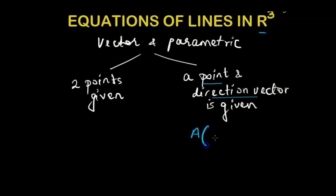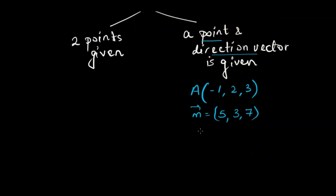So let's say if we're given point A with coordinates negative 1, 2 and 3, and we're given the direction vector as 5, 3, 7. We would just use this information to write it down in vector equation form. So R would be equal to R0 plus T times m.